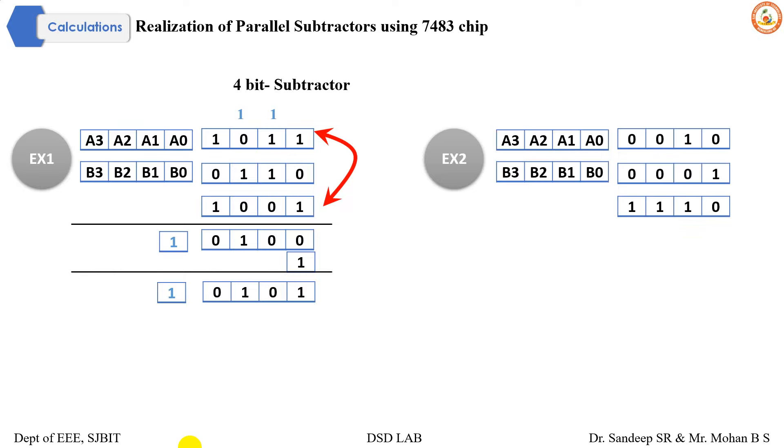Now we take another example here. This is the complement of the minuend. Adding these two, this is our data. We get carry 1. Taking one's complement of this output - that is nothing but we are subtracting by two's complement method. And this is our output that we can see.